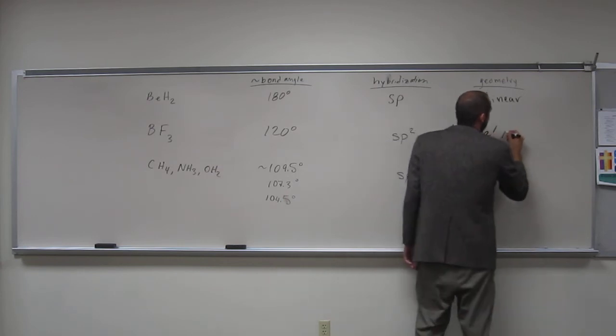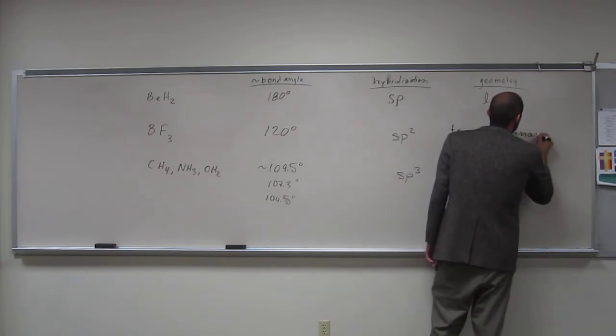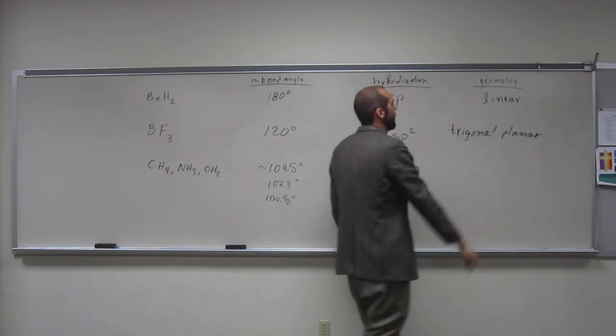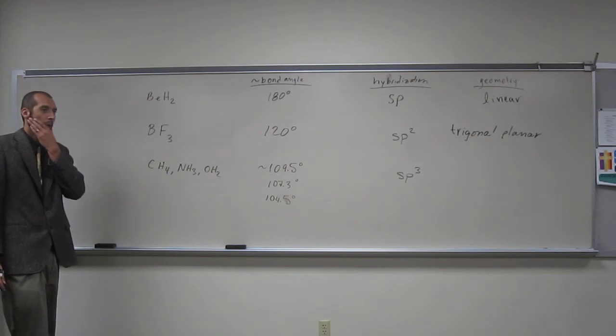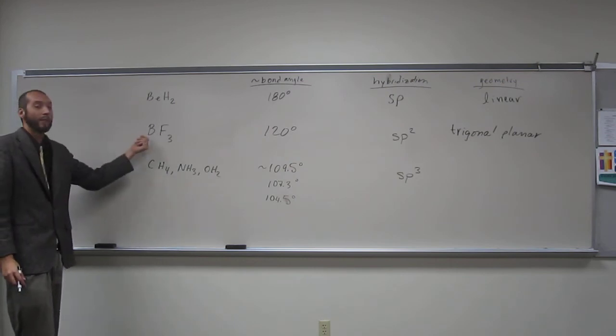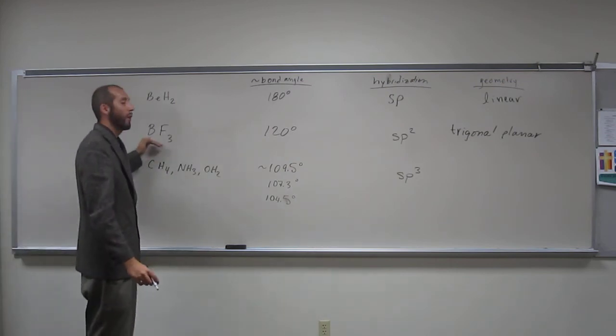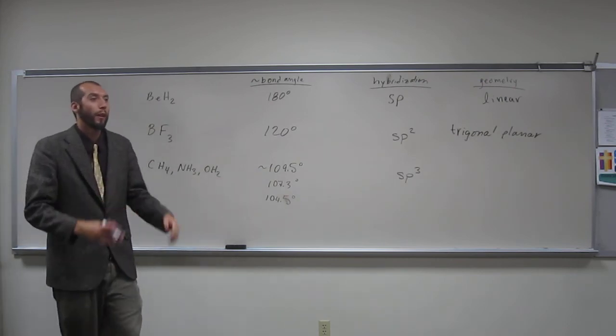Why would it be trigonal planar and not trigonal pyramidal? There's no lone pair electrons there, right? Because boron is one of those things that doesn't abide by the octet.